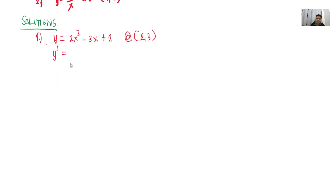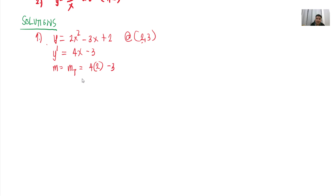The derivative of 2x squared is 4x, the derivative of negative 3x is negative 3, and the derivative of 2 is 0. So the slope — substituting the value of x, which is 2 — that is equal to the slope of the tangent line. That is equal to 4 times 2 minus 3, which is 8 minus 3, equal to 5.